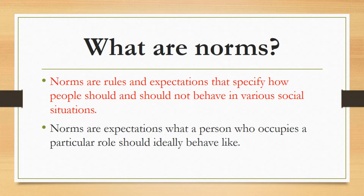Let's suppose you are sitting in a restaurant and a waiter is standing there to take your order. This is a social situation. The waiter will come and most respectfully ask you what he should offer to you. What the waiter has done is a rule taught to waiters, and you were also expecting that the waiter will give you respect — and the waiter did so. So it was the norm that specified that the waiter should behave in good manners. If the waiter goes against this rule, then it will be a violation of the norm.